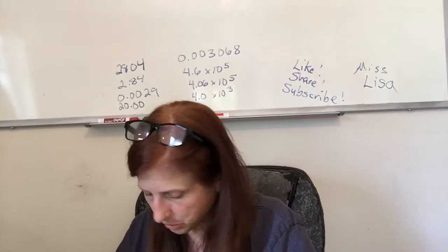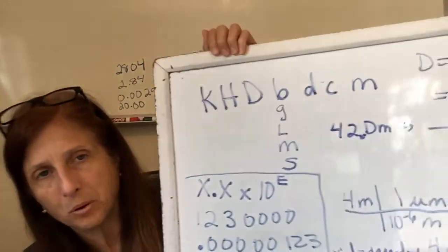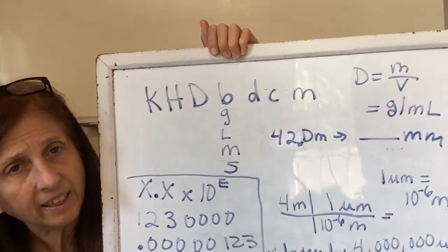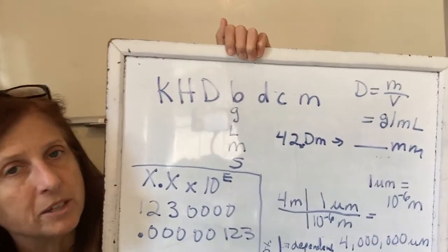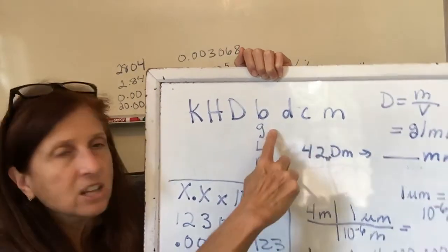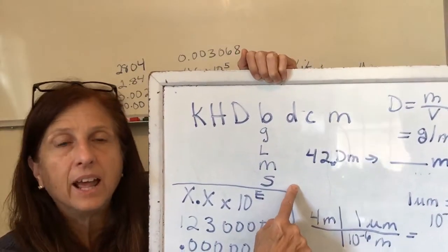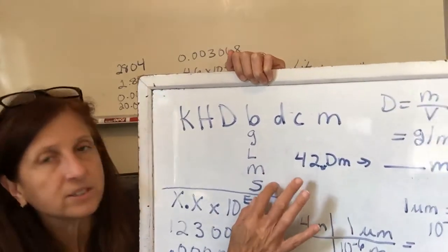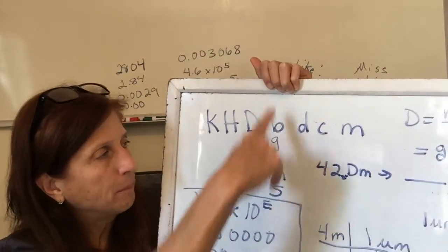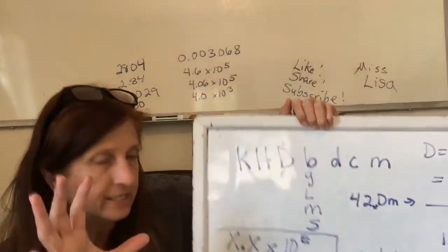So how does the metric system work? You have prefixes and then base units. The base units are gram, liter, meter, second — and second is the same in both systems. Our system is called English or imperial; theirs is called metric or SI. The base units are either based on a real standard — like they used to have one meter stick in France considered the right one — or now they're based on something that wouldn't change, like a certain wavelength of light.